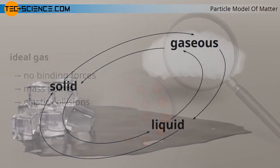Terminology exists depending on the change in the physical state of a substance — from solid to liquid, from liquid to gaseous, or from solid to gaseous, or vice versa. Such changes are also referred to as phase transitions.